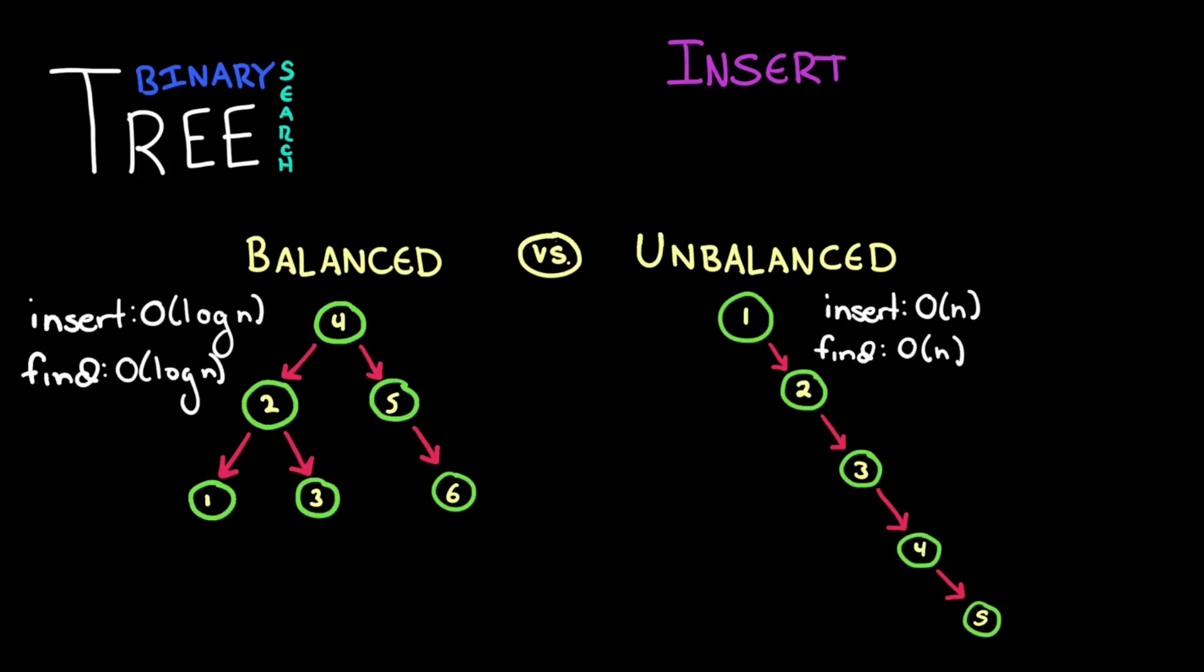There are some algorithms that can ensure that our tree stays balanced. That is, that roughly the same number of nodes will be on the left side of the subtree and on the right. These algorithms get pretty complicated so we're not gonna go into the details here. But it's worth knowing that they're built into a lot of programming languages. And in a lot of cases in interview questions you'll just assume that you have a balanced tree.